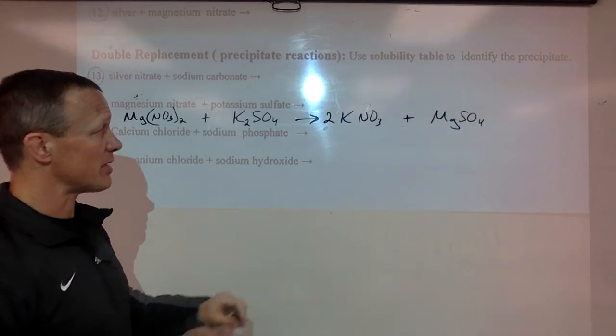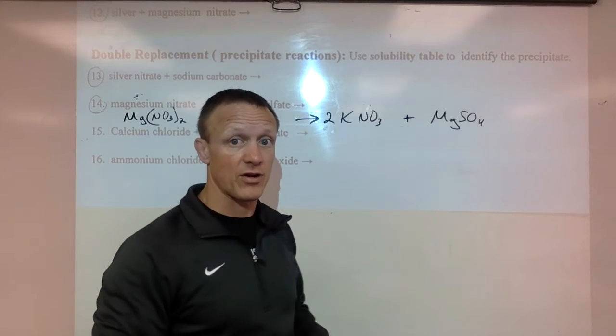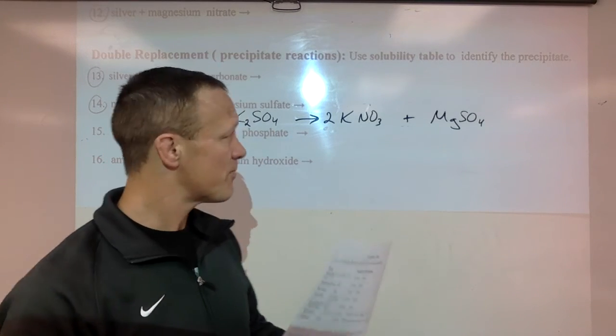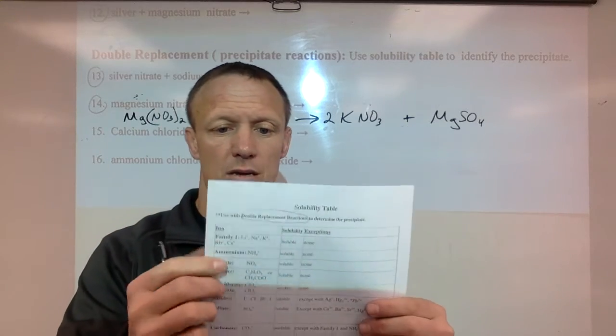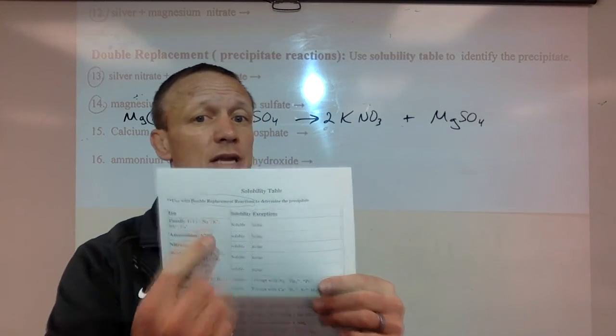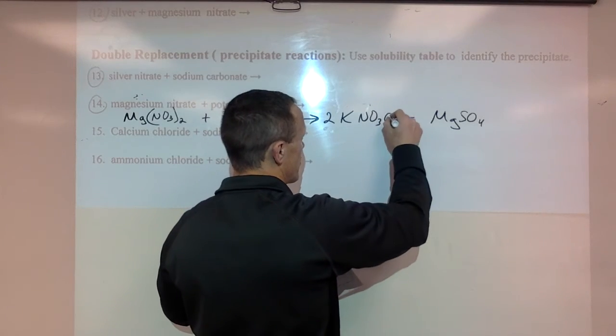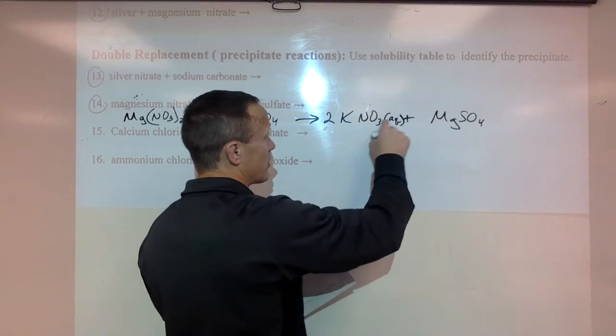Now if we identify the precipitates we're looking at our products that are made and figuring out which one is insoluble. Well KNO3. Anything with K in it is always soluble. So that will not be precipitate. It will be dissolved. So this is aqueous. It will be dissolved.